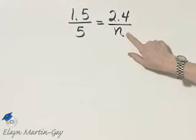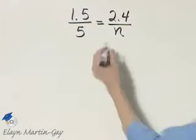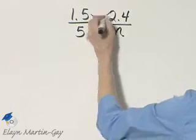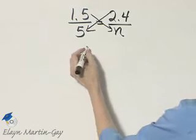Let's solve this proportion for n. To do so, we will make use of cross products. We'll set the cross products equal to each other.